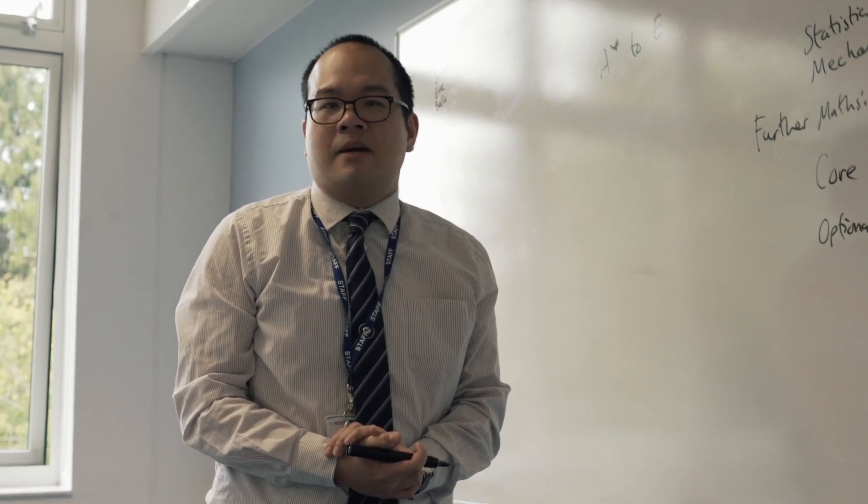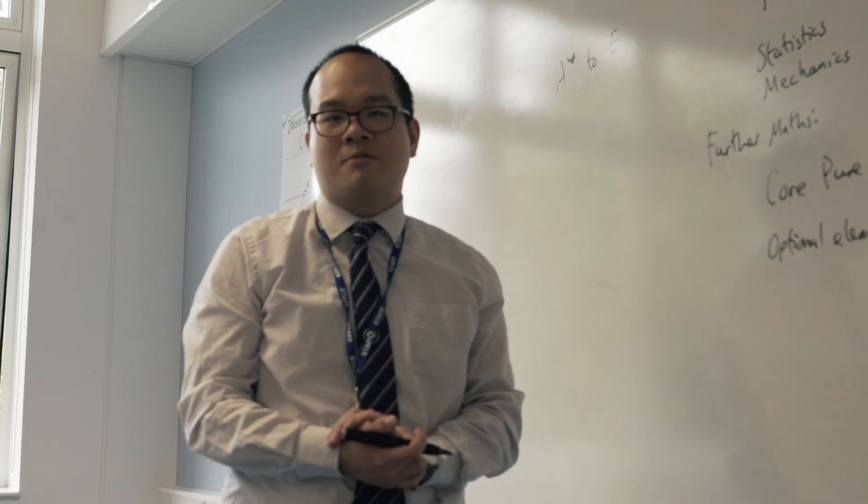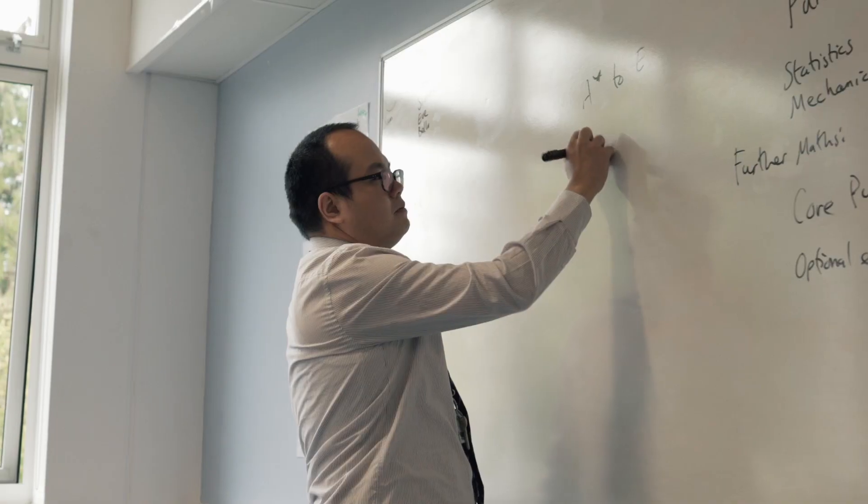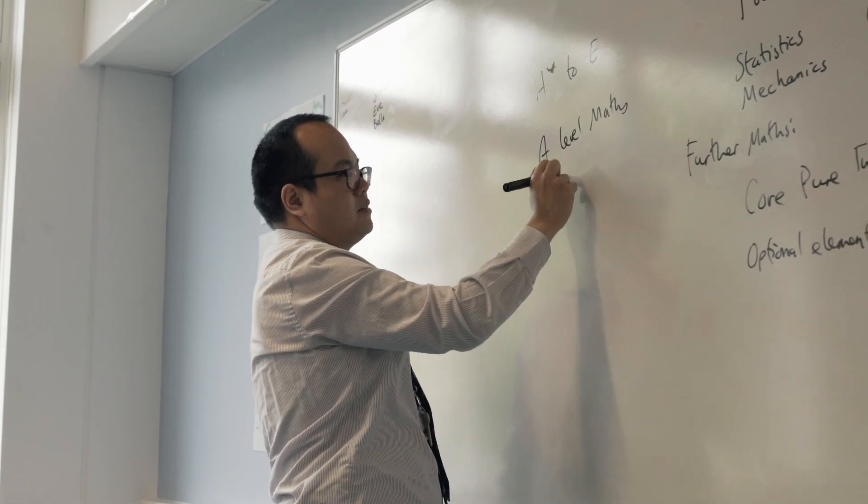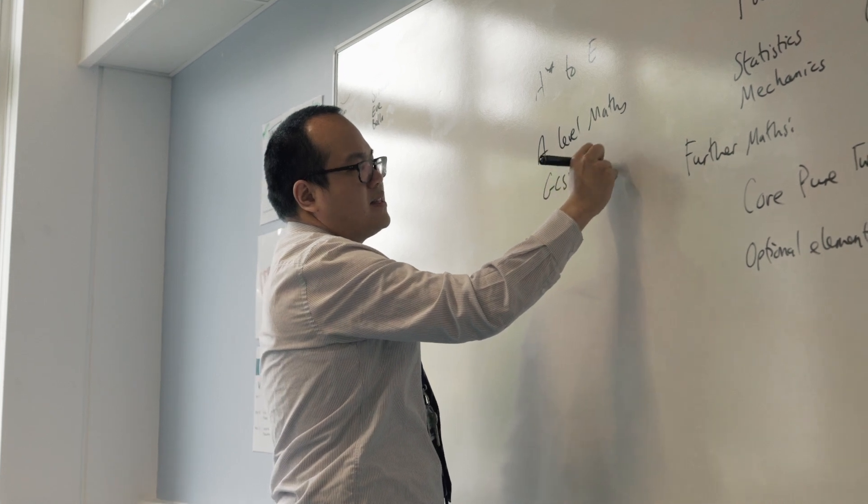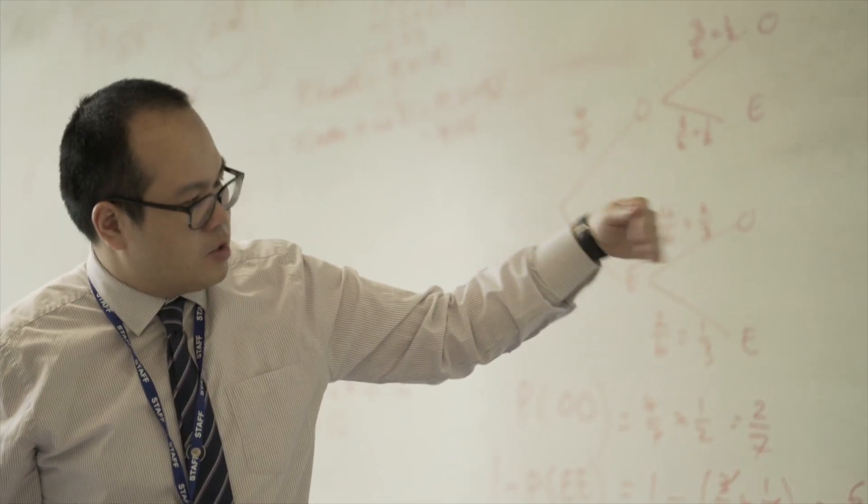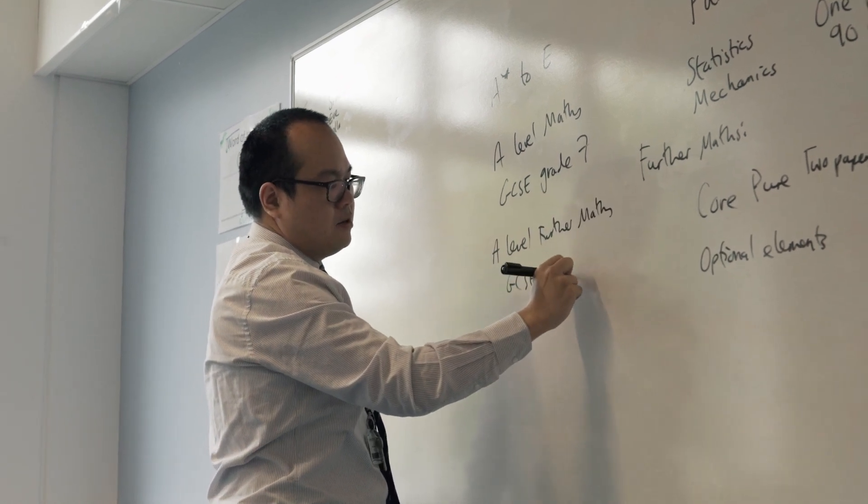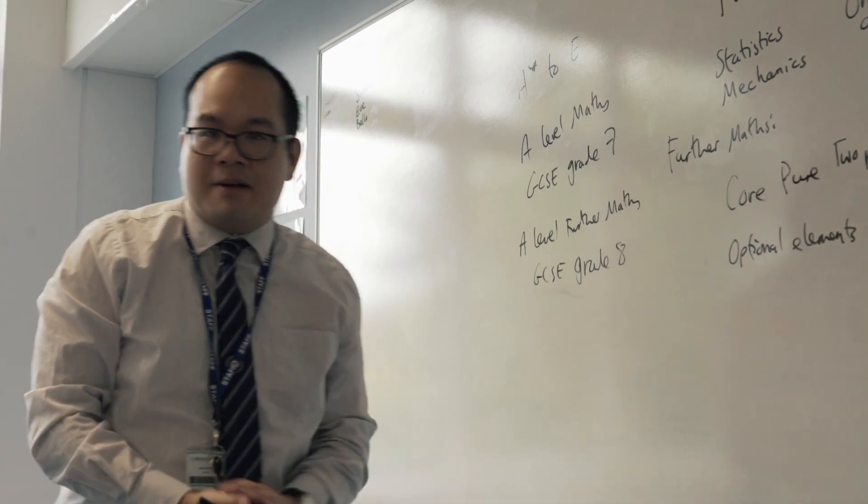In terms of what do I need to do? What grades do I need to achieve in order to do A-Level Maths and or Further Maths here in North Bromsgrove? Then to do A-Level Maths, you need to have a GCSE grade of a 7 or above. If you also want to do Further Maths on top, then we will ask you to achieve a Grade 8 in your GCSE in Maths, as well as choosing Maths as one of your options.